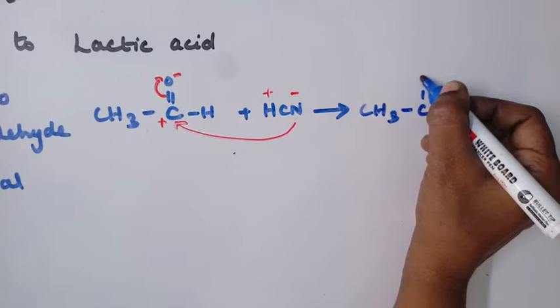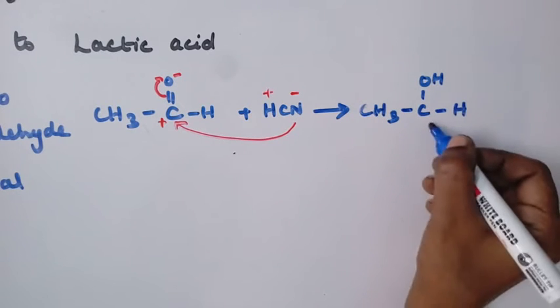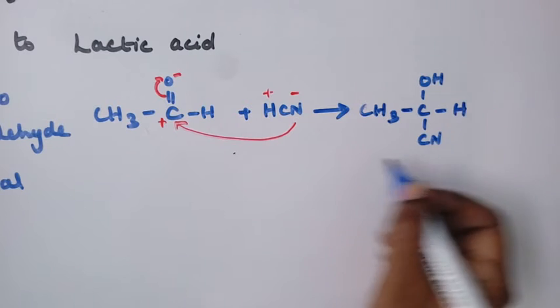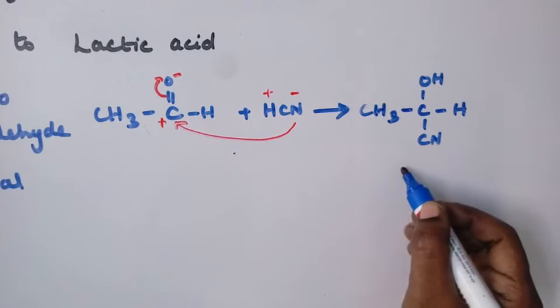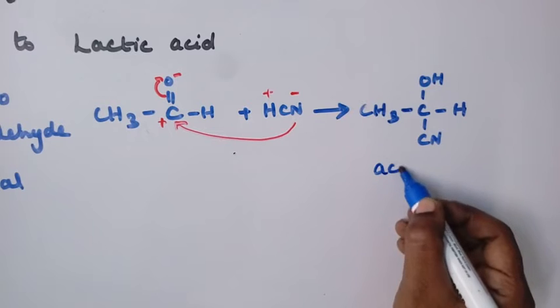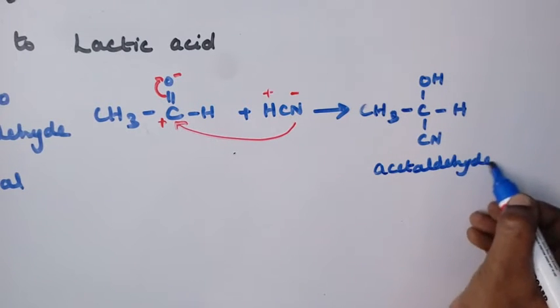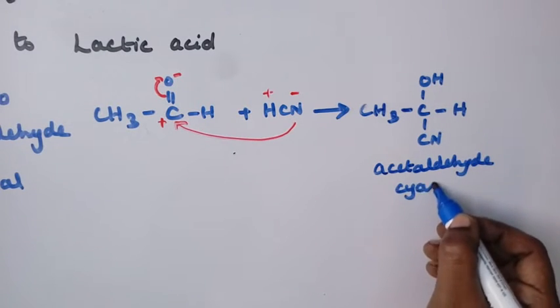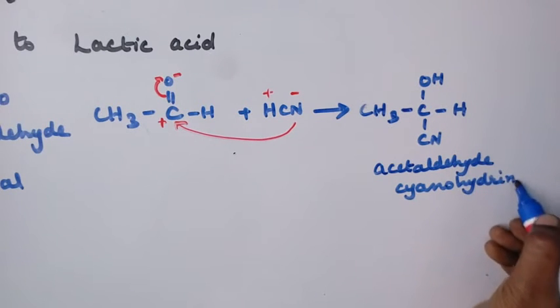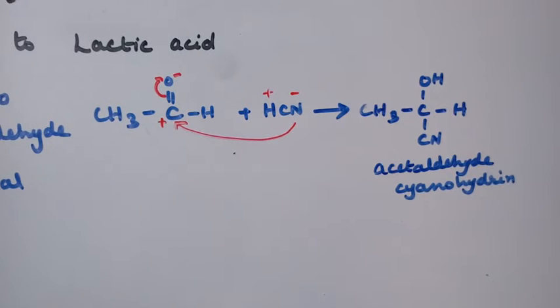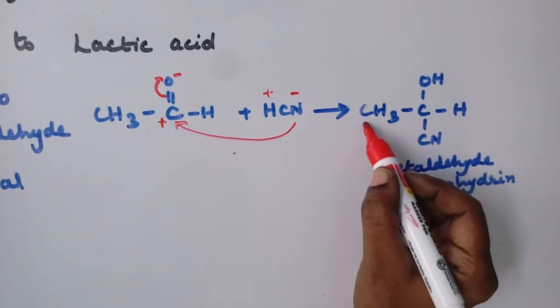CH3C with OH, hydrogen gets added, and with carbon cyanide is attached to carbon. This compound is cyanohydrin acetaldehyde cyanohydrin or its IUPAC name is, when we give the number it is first carbon, this is second one and this is third.